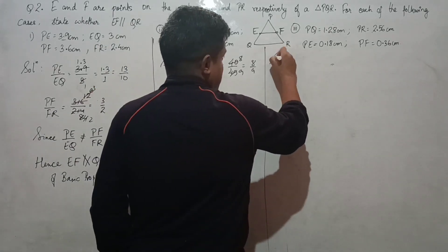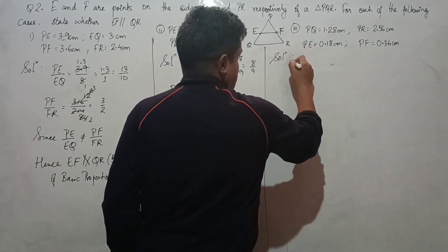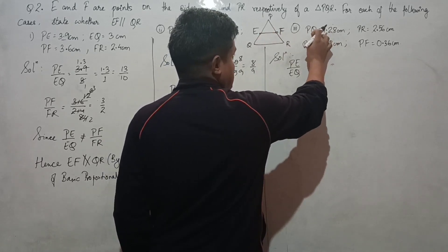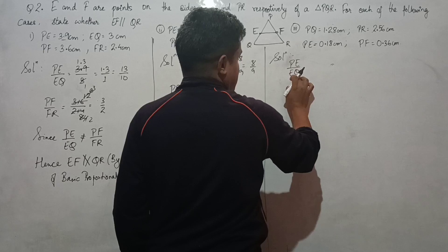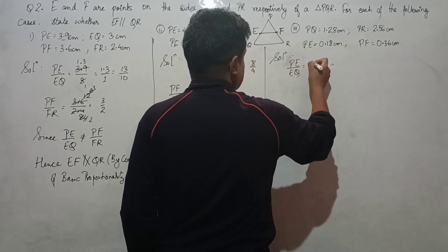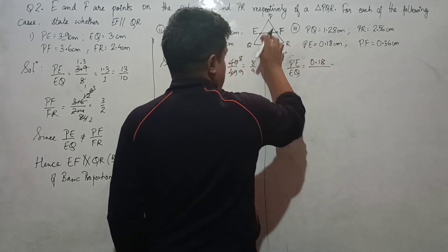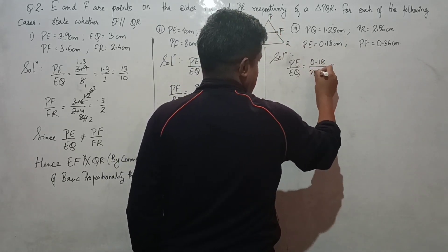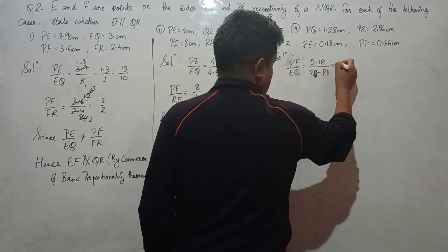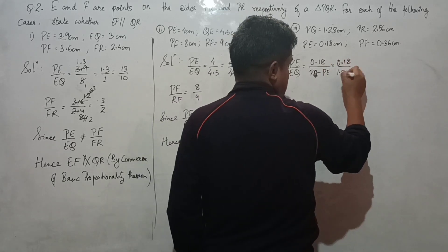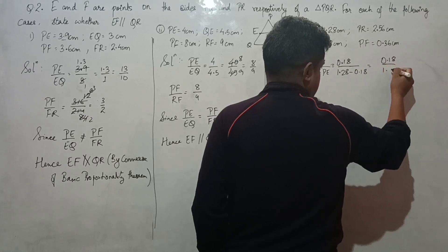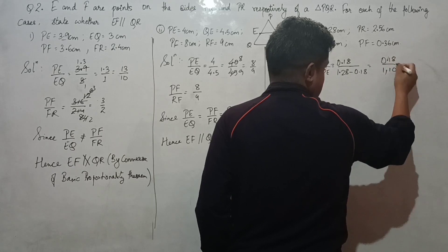Third solution: PE/EQ. Since PE is given but EQ is not, we can find EQ by calculating PQ minus PE. PE is 0.18, so EQ = 1.18 - 0.18 = 1.0. Therefore PE/EQ = 0.18/1.0, which simplifies to 18/100 = 9/55.